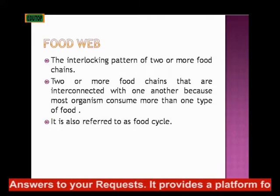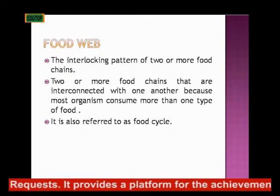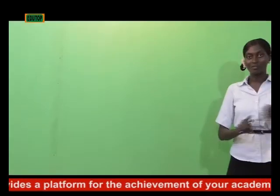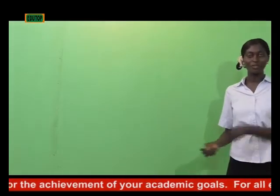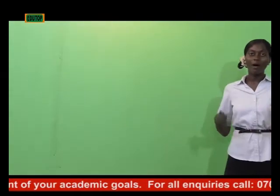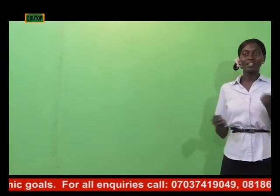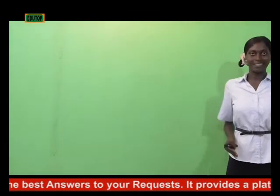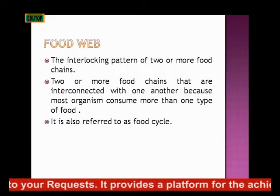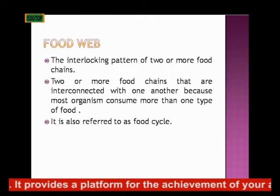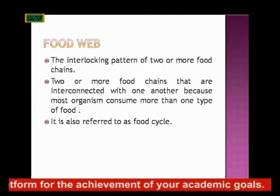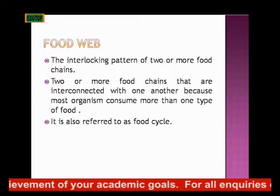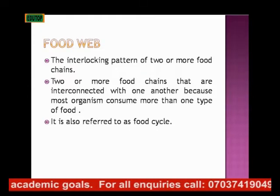Food chains are interconnected because most organisms consume more than one type of food. For example, you don't eat just rice — you eat chicken, fish, beans, all kinds of food. That is why we have the interlocking chain pattern. It is not just that the snake will always eat the grasshopper, or man will only eat snake. Man eats goats, cows, and vegetables too. That is why food chains interlock at certain points, forming a food web.